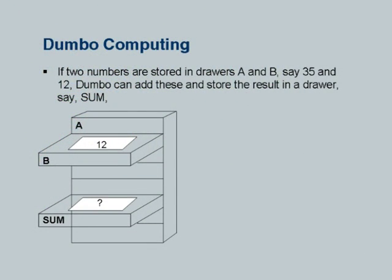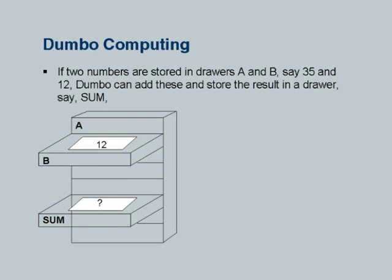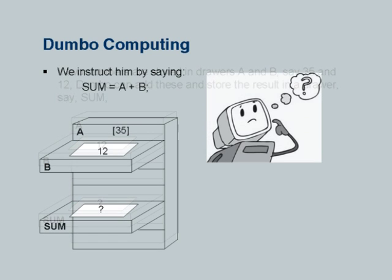We now try to build a model of computing that Mr. Dumbo follows. If two numbers are stored in drawers A and B — say 35 and 12 — Dumbo can add these and store the result in another drawer called 'sum.' The instruction to Mr. Dumbo is: 'sum = a + b.' Most students understand that we want Dumbo to evaluate a + b and put the value in the location for sum. While showing Mr. Dumbo thinking hard, A is shown to contain 35, B contains 12, and the drawer 'sum' continues to contain a question mark — which does not mean an empty drawer, but an unknown or undefined value from some earlier program.